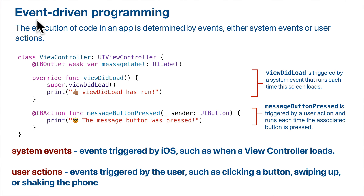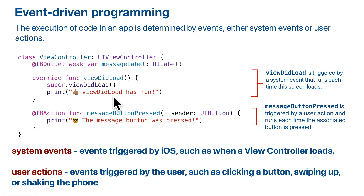Now a key concept: event-driven programming. The app we just wrote handles two types of events. System events are triggered by iOS — for example, 'the view just loaded,' which triggers viewDidLoad. Xcode gives you viewDidLoad automatically because it's really common to have code that executes when the view loads. User action events are triggered by user interaction, such as clicking and lifting a finger off a button. We're going to see lots of other ways to trigger events using other user interface elements as well as different actions like taps and swipes.